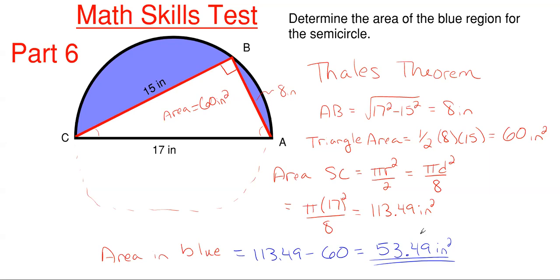So using Thales theorem, it makes this problem so much easier, realizing that if you have a triangle inside of a circle and one side of that triangle is the actual diameter of that circle or semicircle, then there is a right triangle in there.